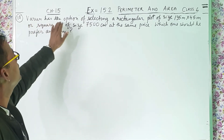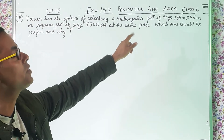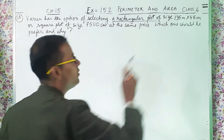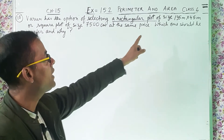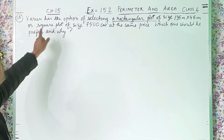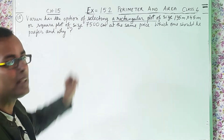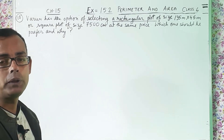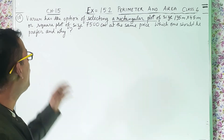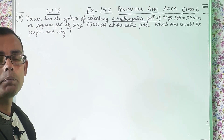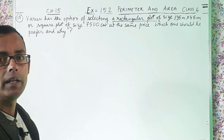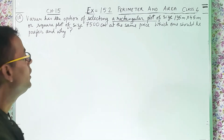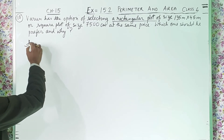Varun has the option of selecting a rectangular plot of size 135 meter into 45 meter, or a square plot of size 7500 centimeter, at the same price. That means Varun is given two options — either buy the rectangular plot or the square plot — both at the same price. Which one should he prefer and why? Let us start the answer.